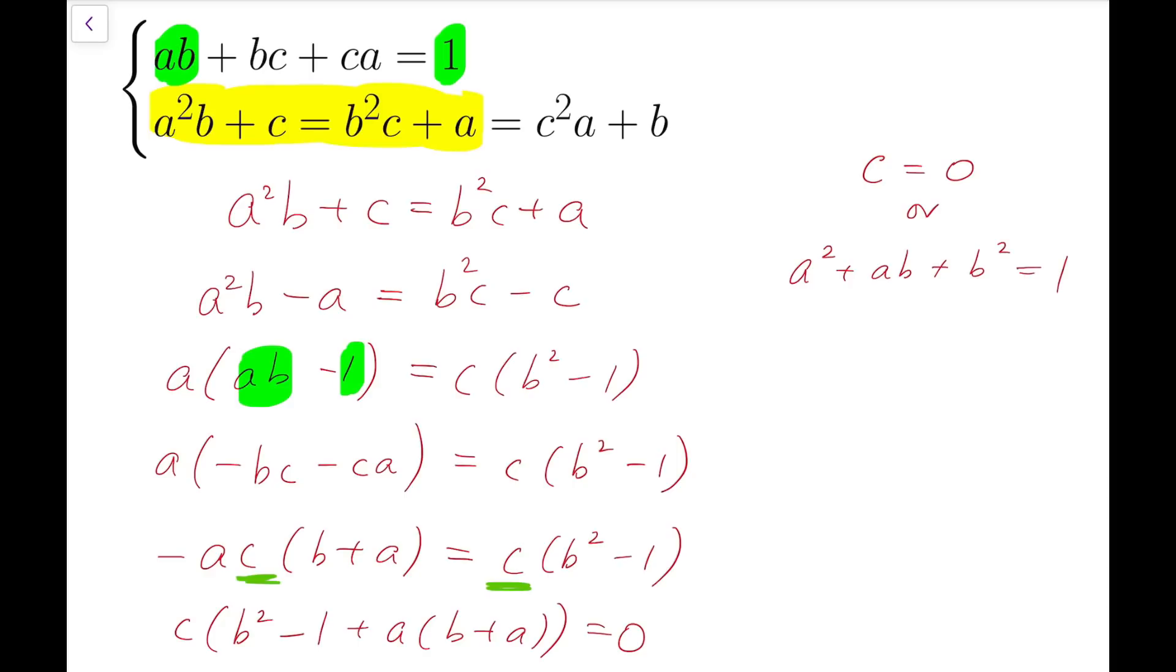Now for the case c equals 0, it's actually very easy because the first equation becomes ab equals 1, all the other terms become 0. And for the second equation, we have a²b equals a equals b.